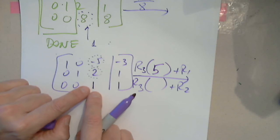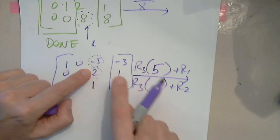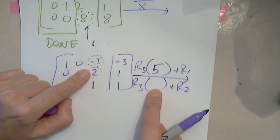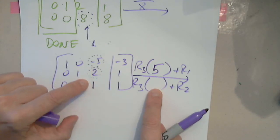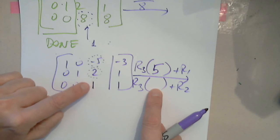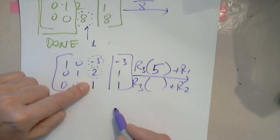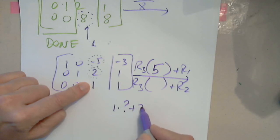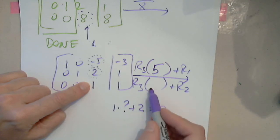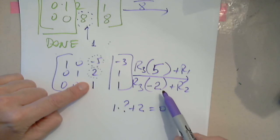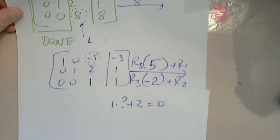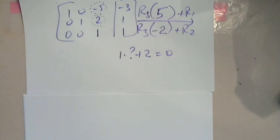What do I multiply 1 by to eliminate the negative 5 in row 2? Let's try again. I have to multiply 1 by a number to add it to 2 to get 0. It's negative 2. Is that clear, everyone? Is that clear why it's negative 2? Final step, and then we can read the solution.